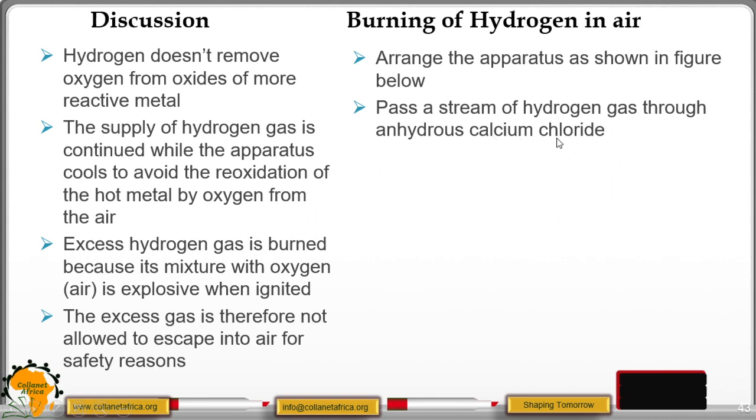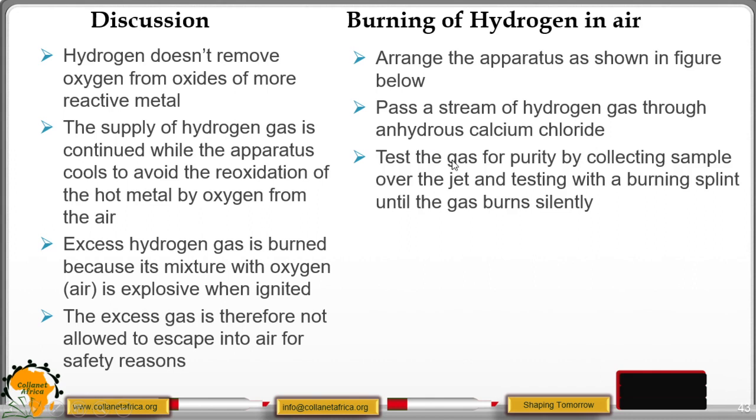We pass through anhydrous calcium chloride in order to remove the water molecules. Anhydrous calcium chloride in this case is a dehydrating agent, and it is used to dry the stream of hydrogen gas.